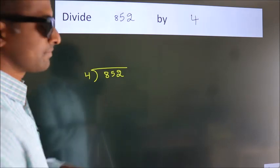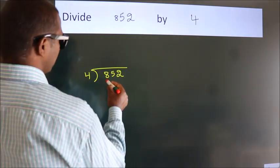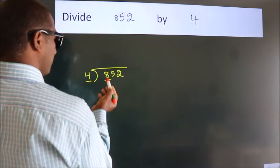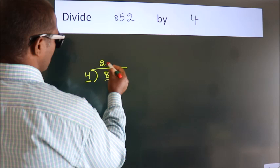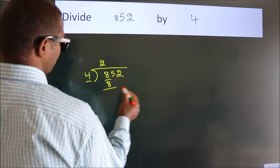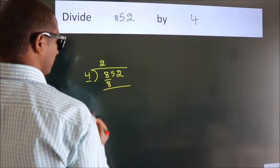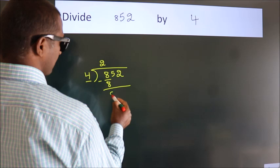Next, here we have 8, here 4. When do we get 8? In 4 table, 4 twos, 8. Now we should subtract. We get 0.